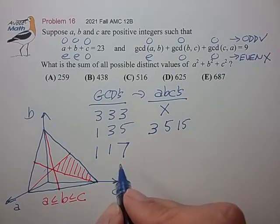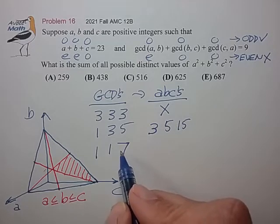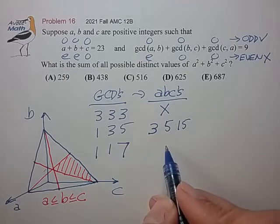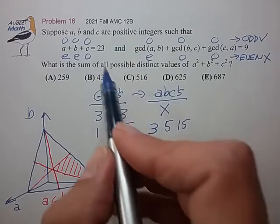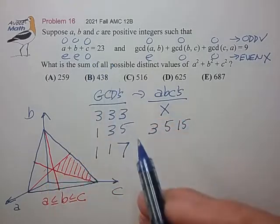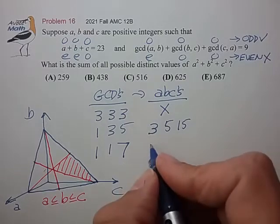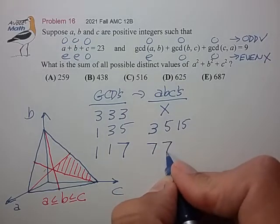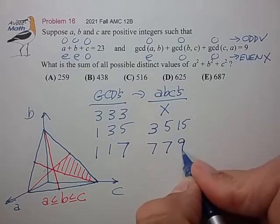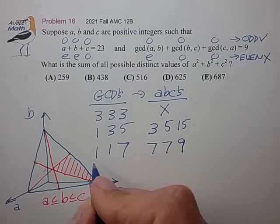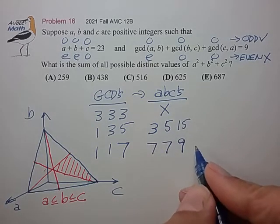For GCDs of 1, 1, 7, we could have two numbers, say 7 and 21. But that already sums beyond 23. So that's no good. So the numbers to create the GCD of 7 would have to be 7 and 7. The balance number would be 9, which then correctly creates the GCDs of 1 and 1. So that's a valid pattern.